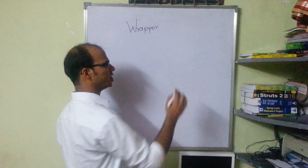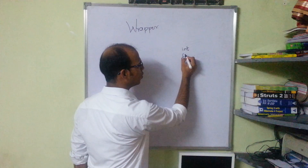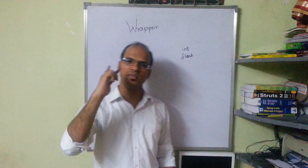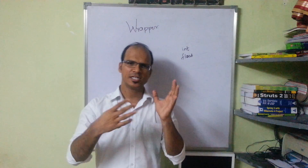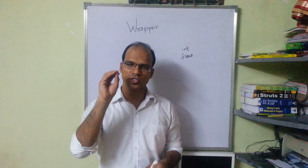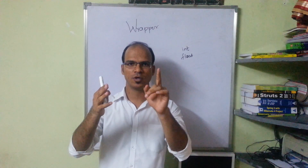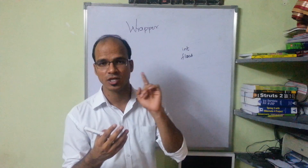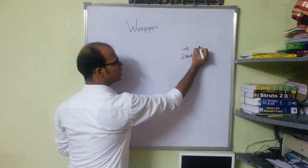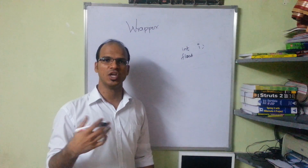Now when you create any variable, like an int variable or a float variable — all these primitive types are derived from C language. Since C is POP, it follows POP. But in Java, everything should be an object. When you create a variable, it should also be an object. When you create an int variable it should be an object, but unfortunately when you write 'int i', this is not an object — it's a primitive variable.